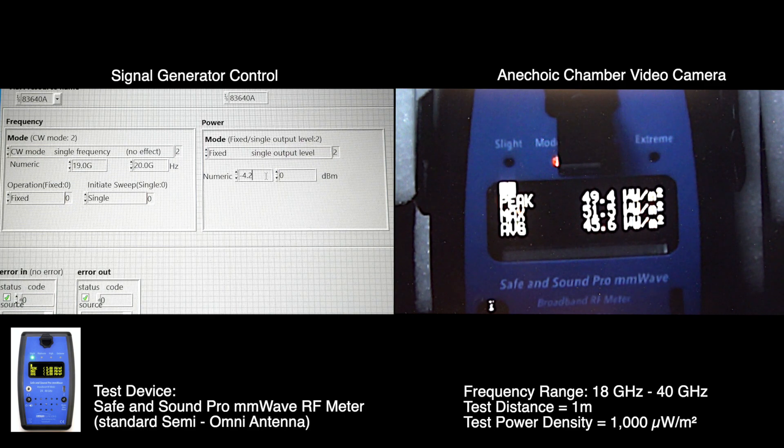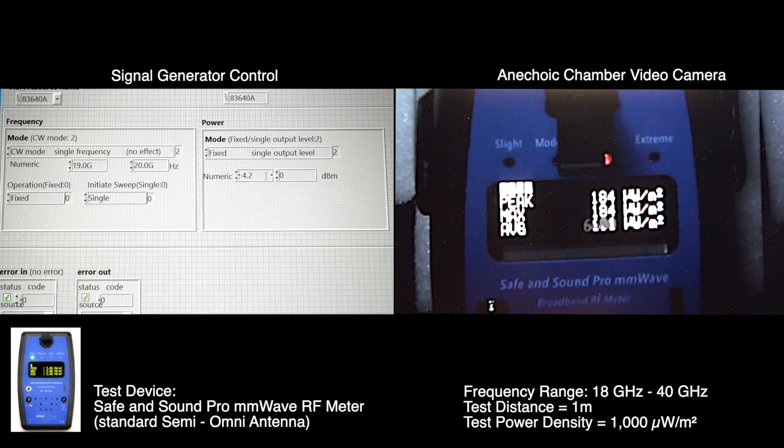And we know it needs to be minus 4.2 dBm. 175 microwatts per square meter average. Now let's go into the operating range of this meter.